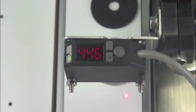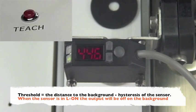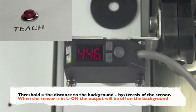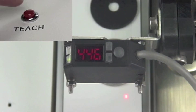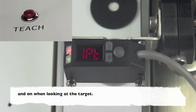With the sensor positioned looking at the background, I press and release the teach button. The threshold is automatically set to the distance to the background minus the hysteresis of the sensor.